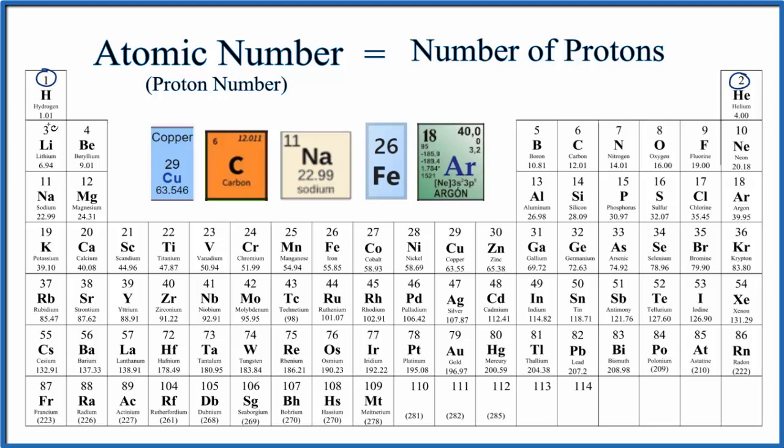As you go across the rows here, the periods, as we go across, the atomic number, that whole number, increases by one each time we move over to another element.